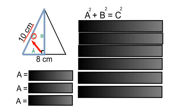Our bottom line we'll call a. Since a is going to be half of the original triangle, the distance for a will be 4 centimeters. We can now solve for b, which is the height.